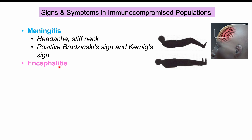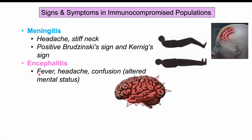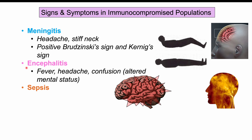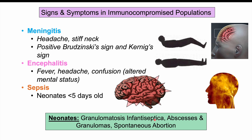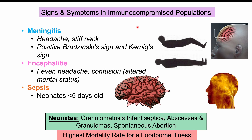Patients can also develop encephalitis — inflammation of the brain — with fever, headache, confusion, or altered mental status, or a combined meningoencephalitis. Sepsis is seen most commonly in neonates less than five years old, and specifically neonates can develop granulomatosis infantiseptica — widespread abscesses and granulomas throughout the body — which can also cause spontaneous abortion. These severe outcomes contribute to listeriosis having one of the higher mortality rates among foodborne illnesses.